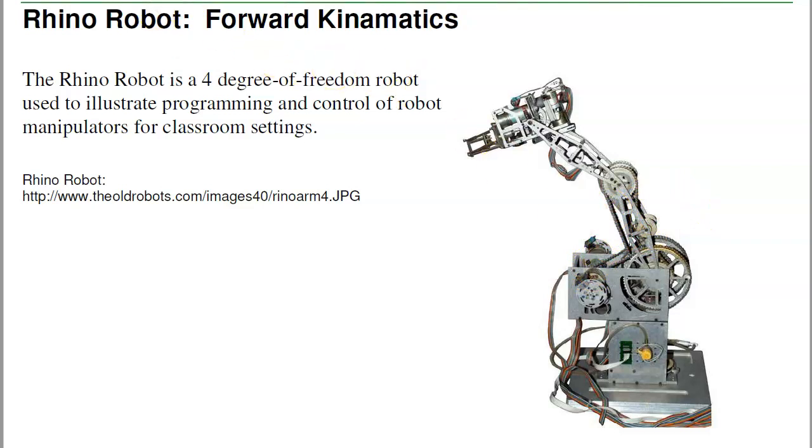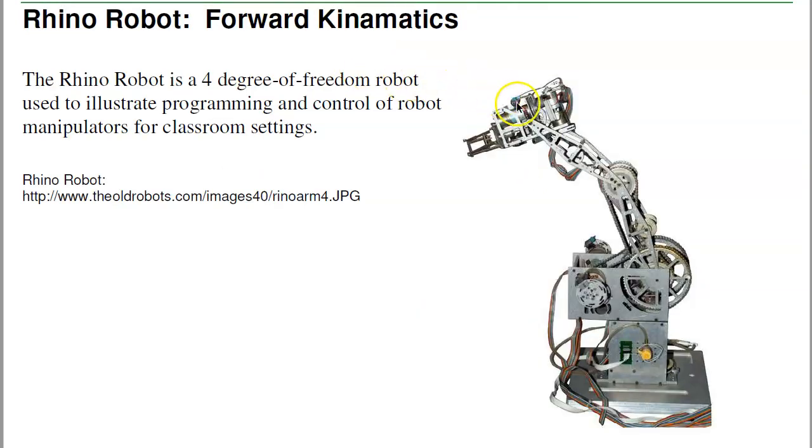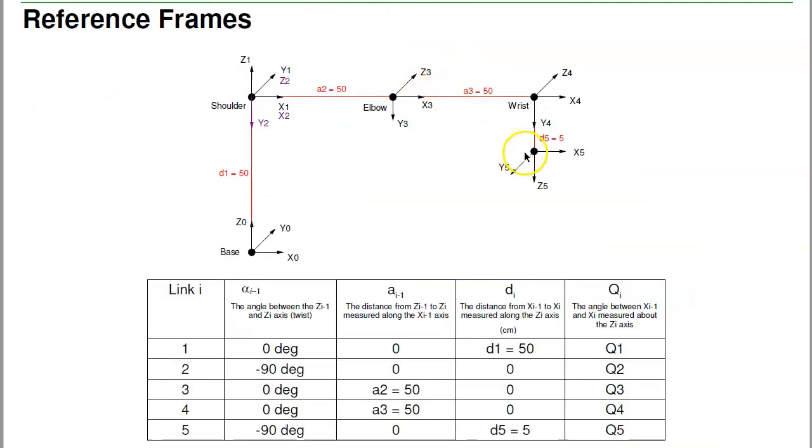The elbow rotates about axis C3, then the wrist rotates about axis C4, and then pointing down is the end effector. This one actually has an extra degree of freedom right here, that's the end effector, that comes down to the tip of the robot.